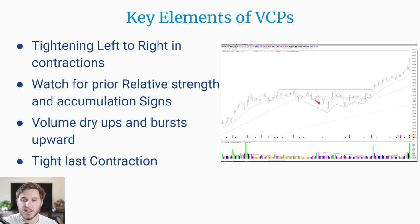You also want to see volume dry-ups and bursts upwards within the base. On these downtrends within the base, you want to see declining volume, and from left to right, a downward trend line in volume until that pivot point — where you want to see a surge upwards in volume, indicating that institutions are accumulating right at that point. This amount of volume cannot be created by just retail traders; it's a hallmark of institutional buying, which should last a few weeks or months, creating a nice trend that we can ride.